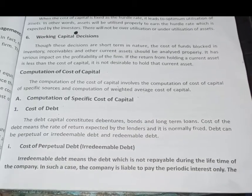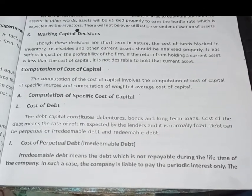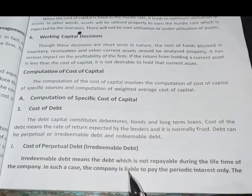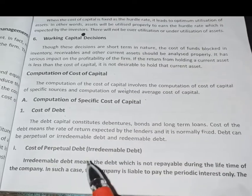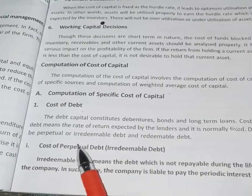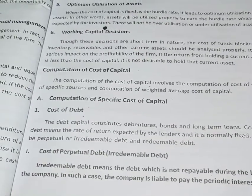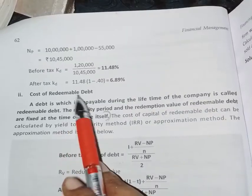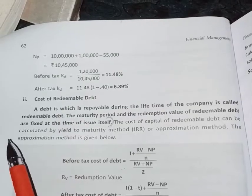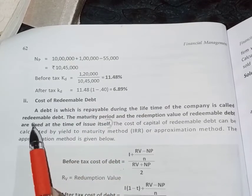The cost of perpetual debt is the debt which is not repayable. In the company's lifetime, there are so many debts, loans, and repayments — we cannot redeem them. This is the meaning of perpetual debt; it is a long-time process. The debt which is repayable during the lifetime of a company is called redeemable debt, which is the opposite of perpetual debt.